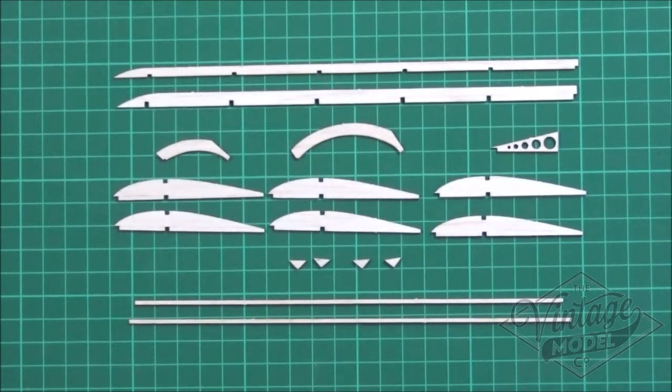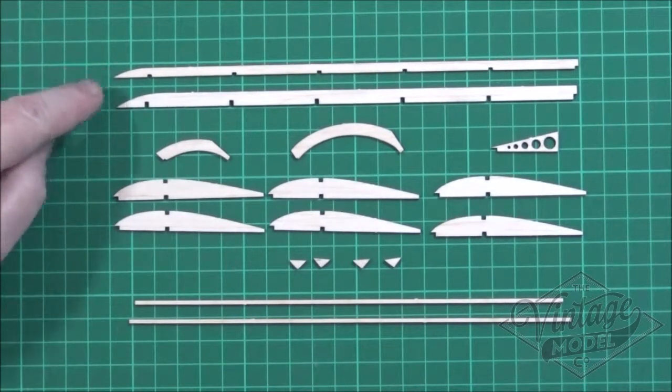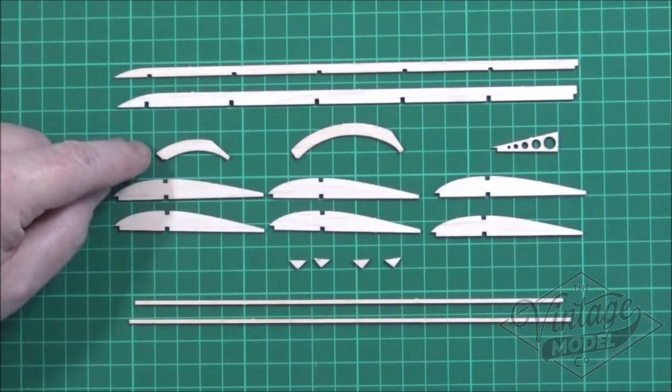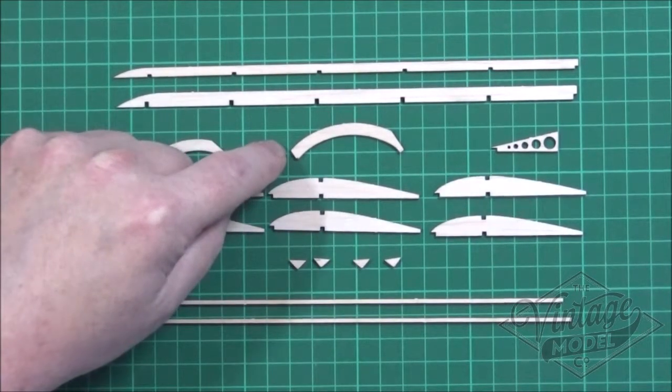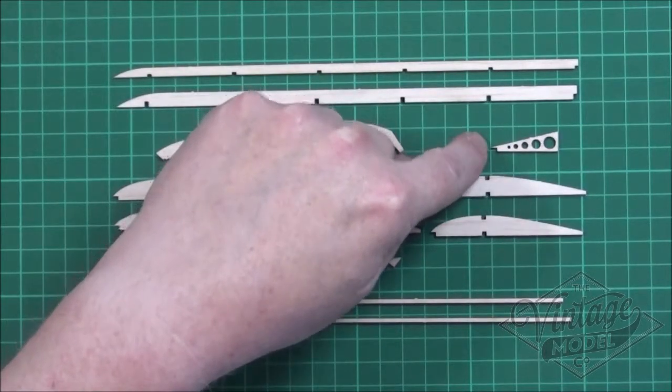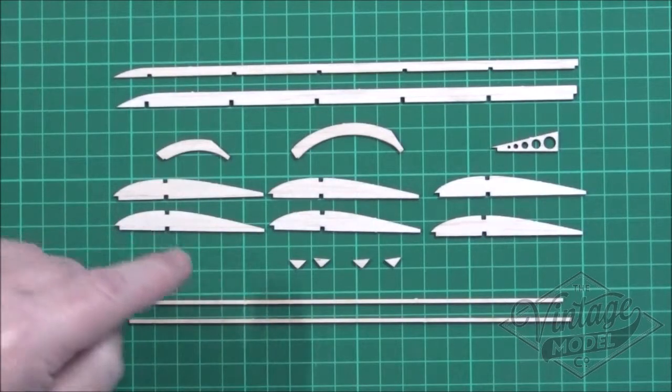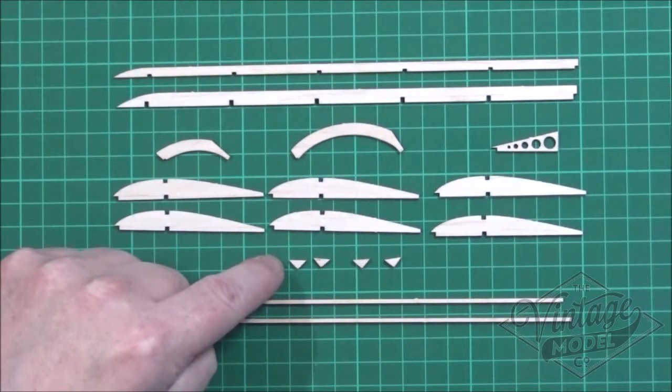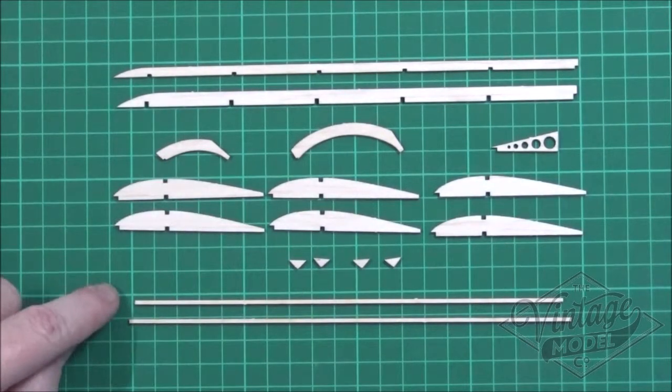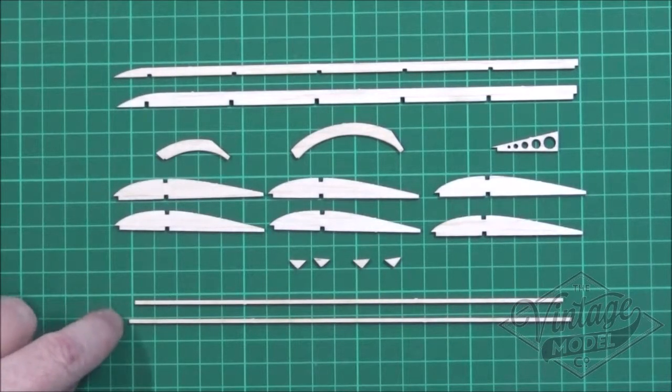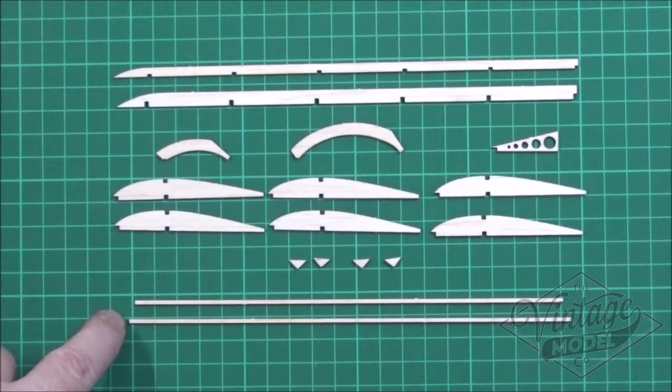To make up the left wing we're going to need the following parts: one each of W1, W2, W3, W4 and W5. We've then got six R2's, four corner gussets, and then a bottom spar and the top spar from the 1.6 mil square strips.